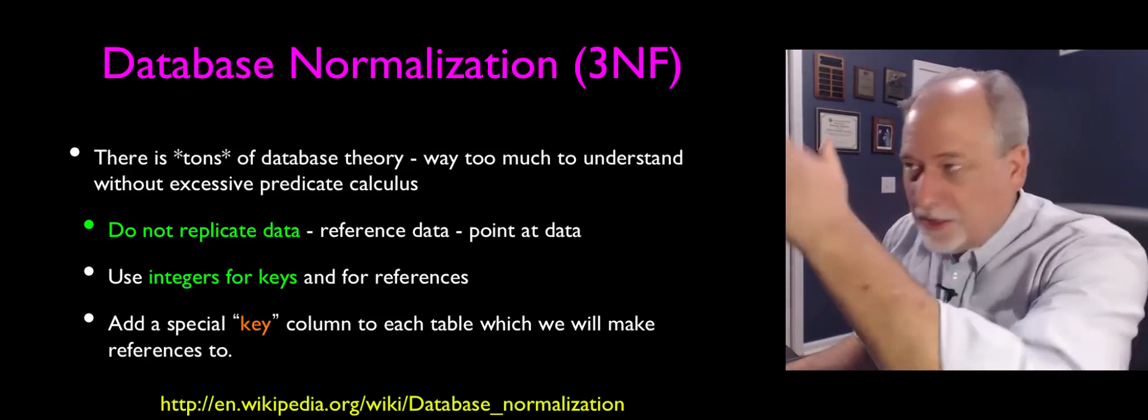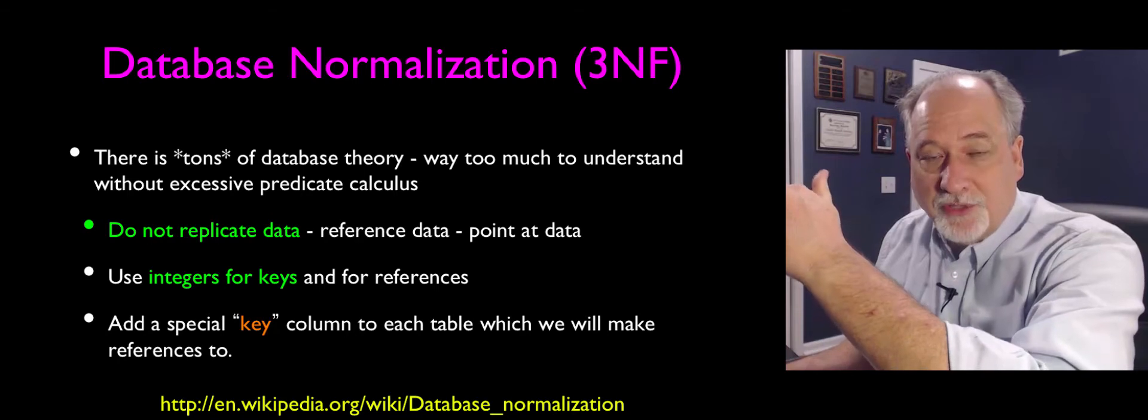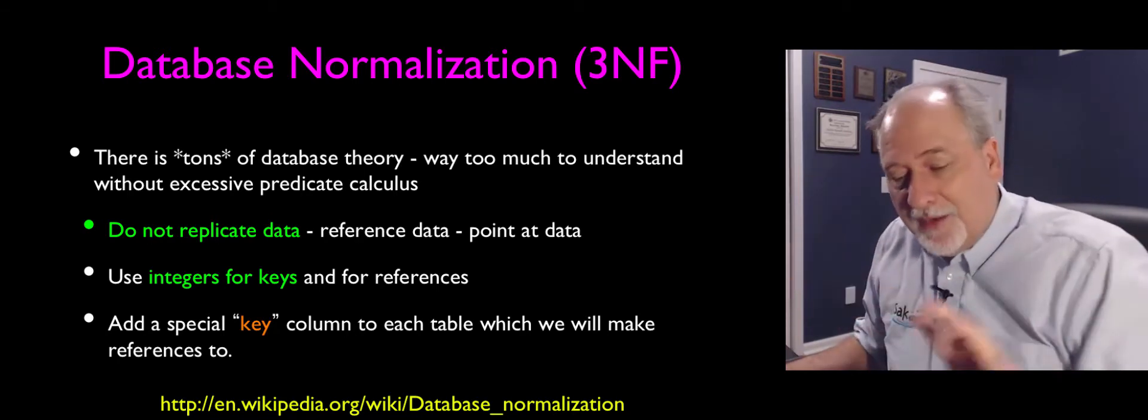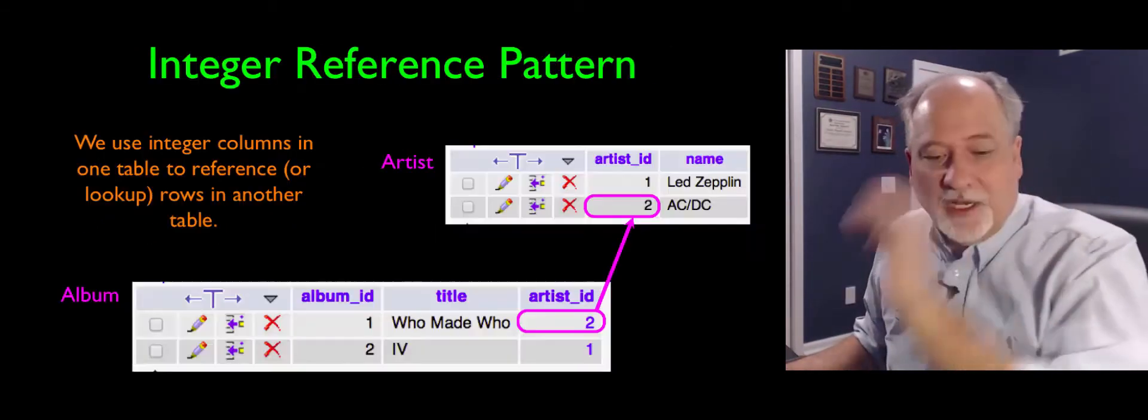And so we create these places that have a user's name, Charles Severance, then a user key, and then everywhere else we have the user key, and we connect back to the user key.